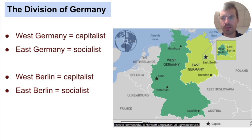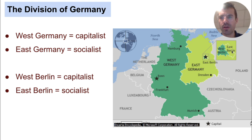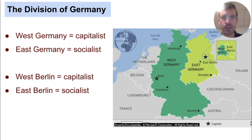Now look at Berlin, the capital city of Germany. Berlin is in East Germany, the socialist country. But the city itself was also divided in two, with one half controlled by the U.S. and the other half by the Soviet Union. The U.S. half was West Berlin, which was capitalist, and the Soviet half was East Berlin, which was socialist. So West Berlin was an island of capitalism surrounded by socialist East Germany. You can remember these because the West is associated with capitalism in both West Germany and West Berlin.